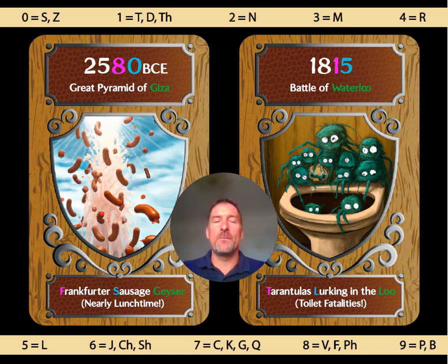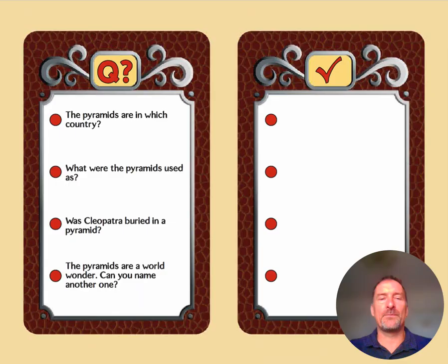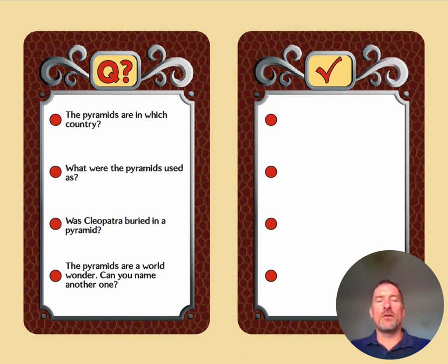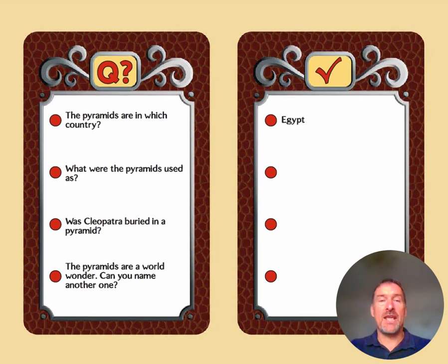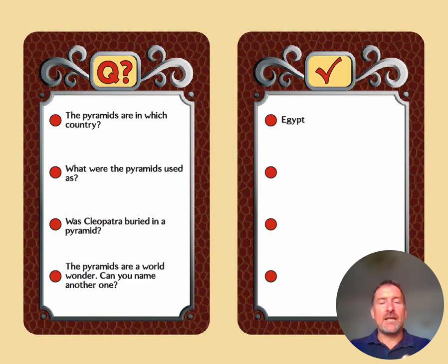Now leave those images in your mind and we'll come back to them in a minute. But first, let's have a quiz on your knowledge of those two events. Here are four questions about the pyramids. Question one: the pyramids are in which country? The answer is Egypt.